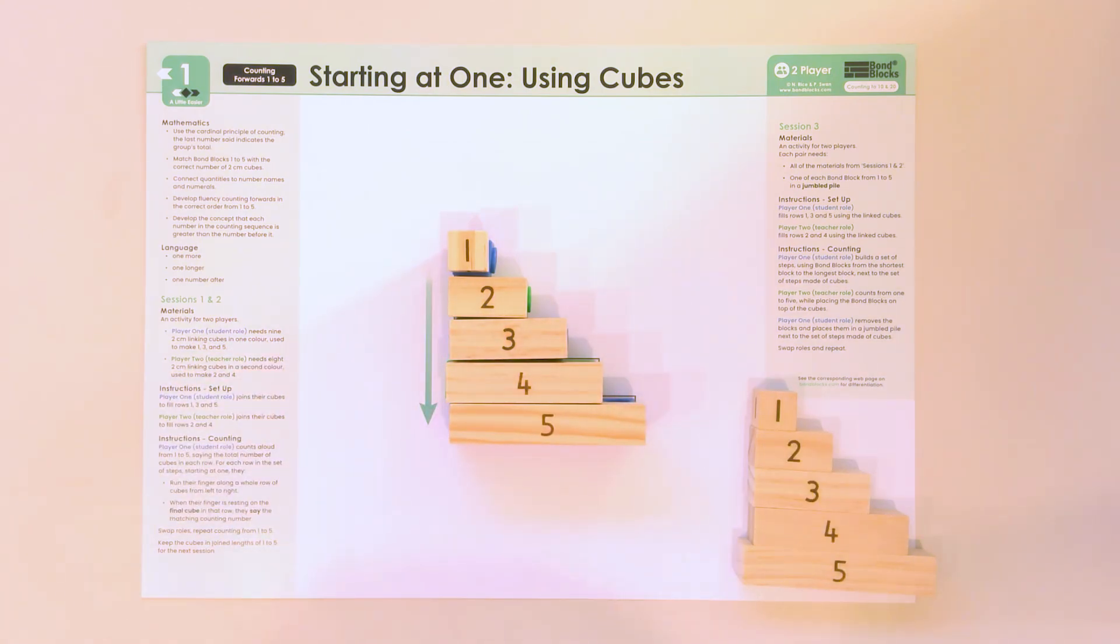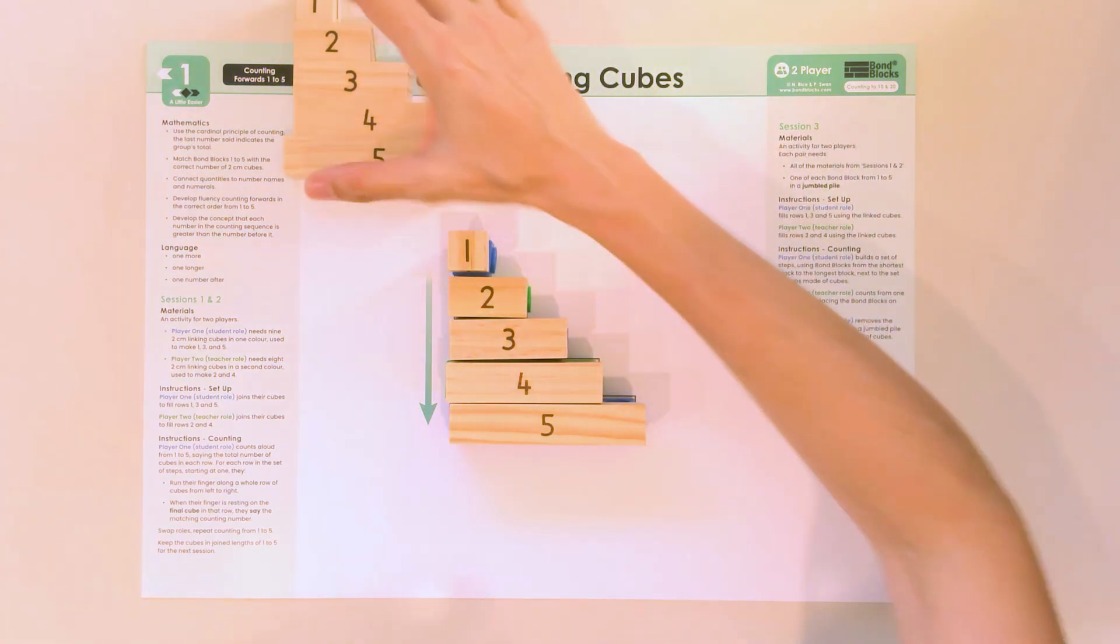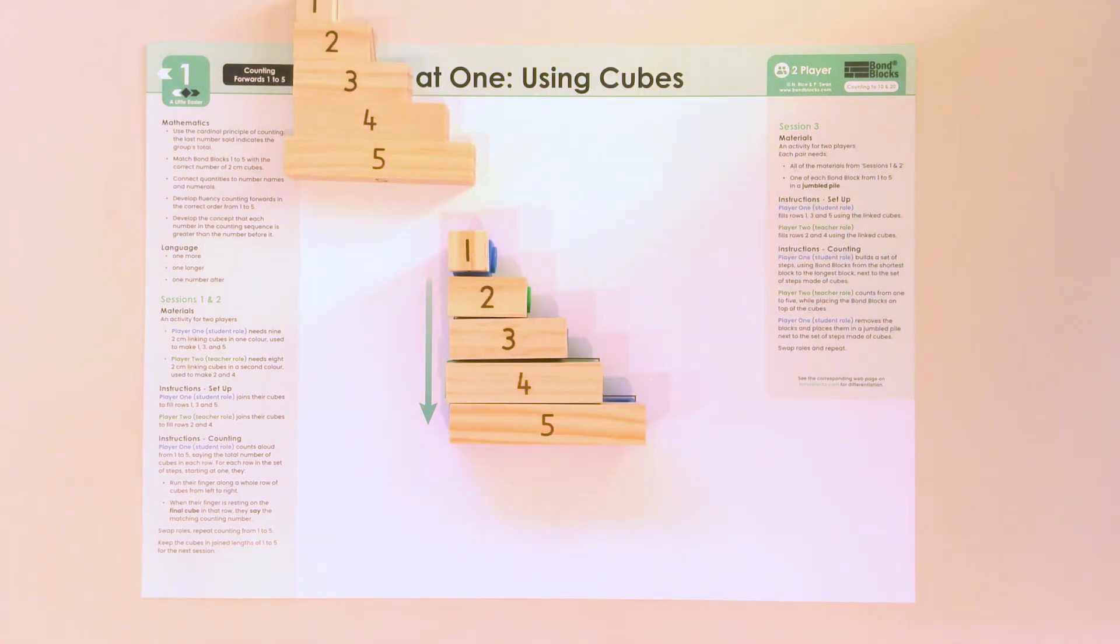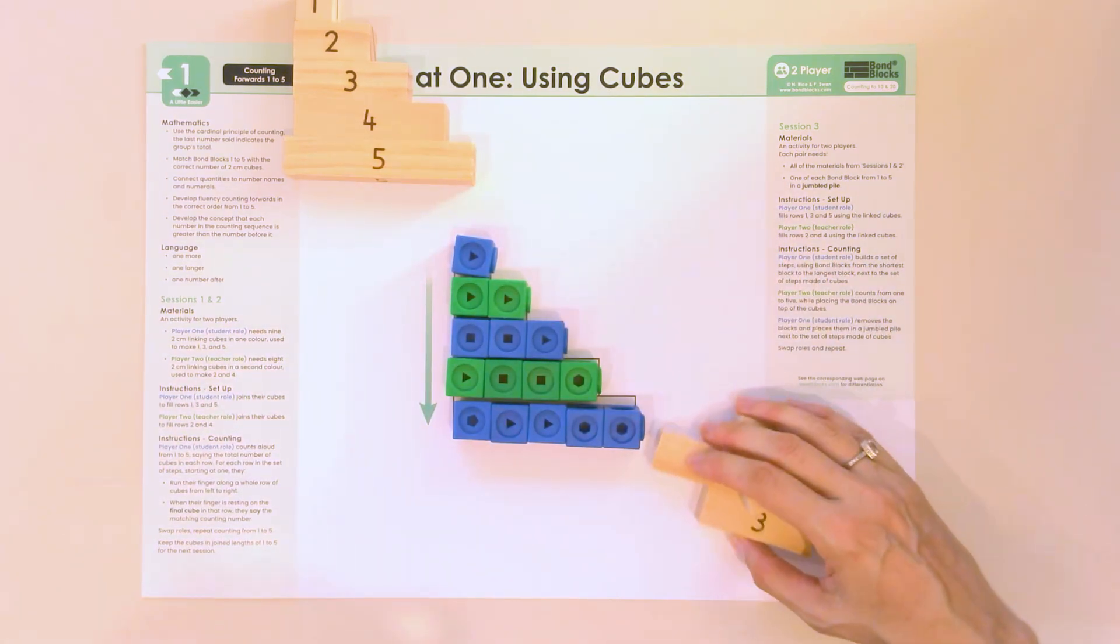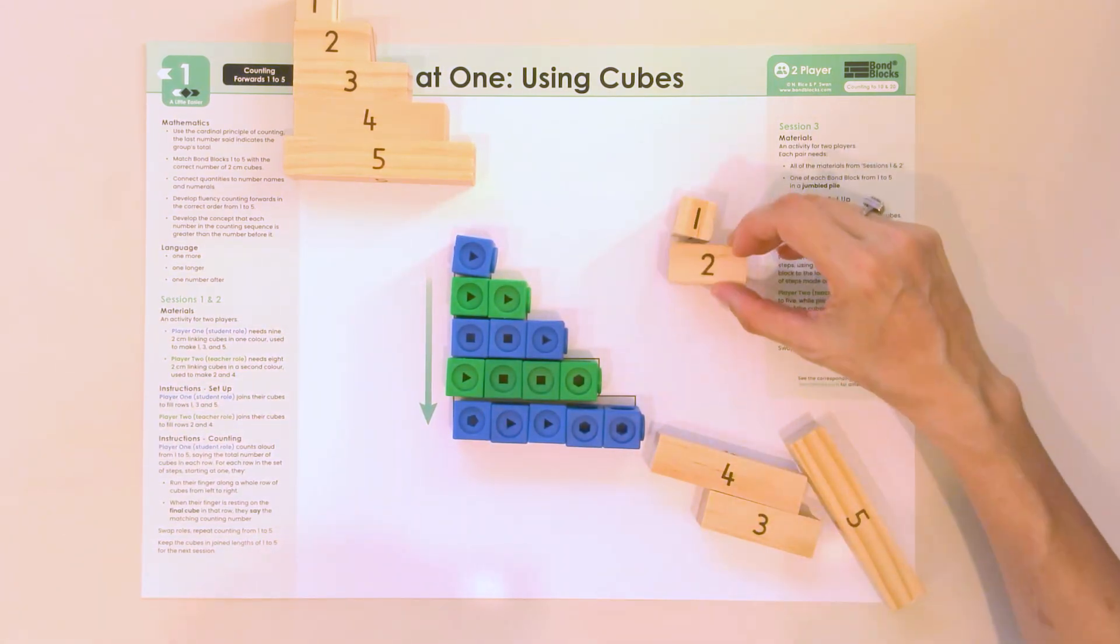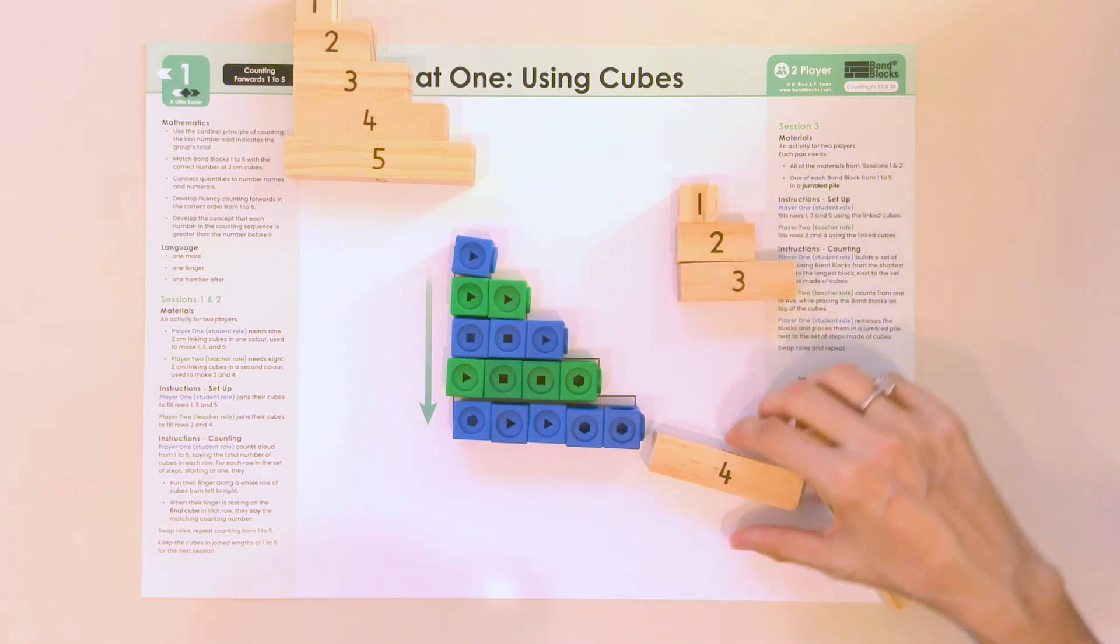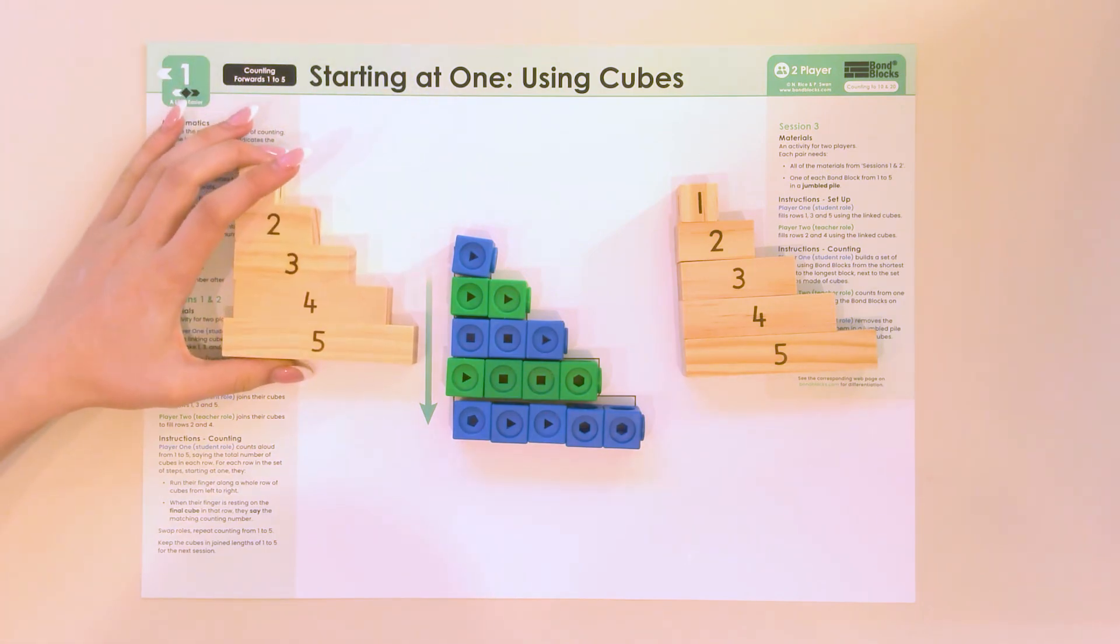Now, we're going to swap roles. So, we'll keep this set together as the answers. Can you jumble up this pile for me? It's my job to go from the shortest to the longest. Now, it's your job to check them.